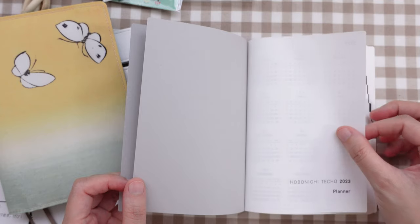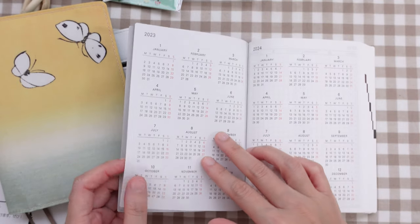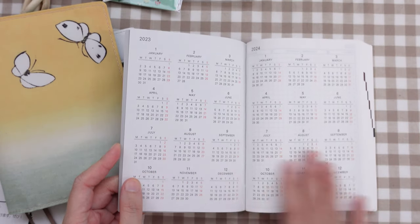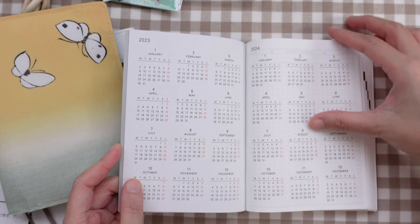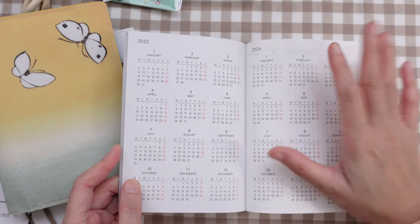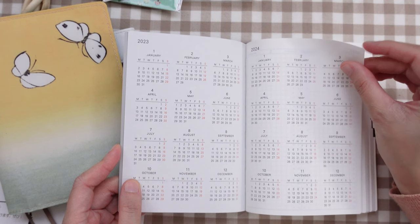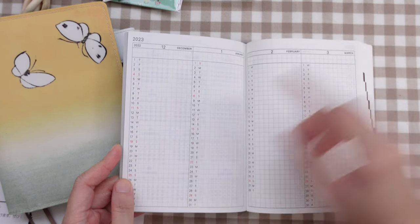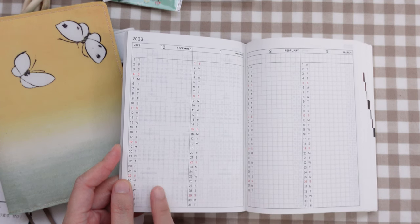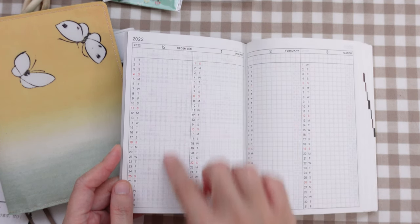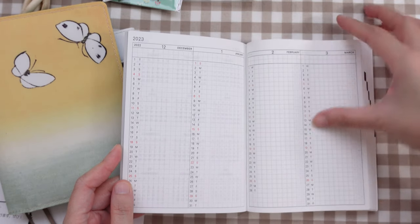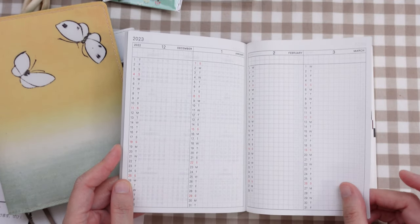So for the first page, we have the cover that says Hobonichi Techo 2023. We have a calendar for 2023 and 2024. So I plan to use this as a habit tracker, and I'm going to show you the setup in another video.